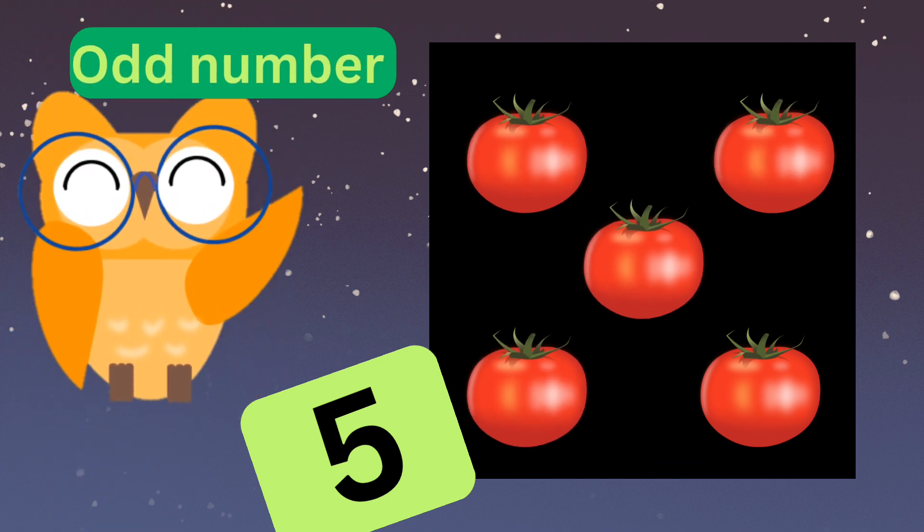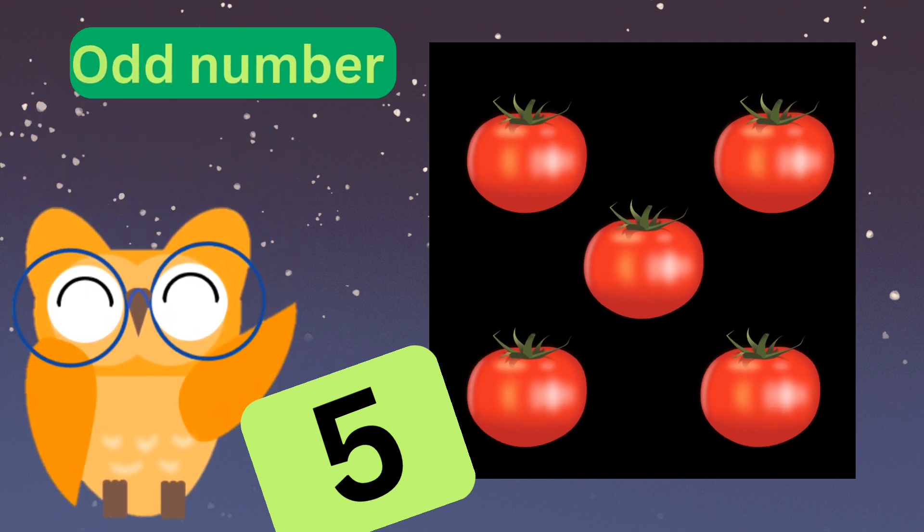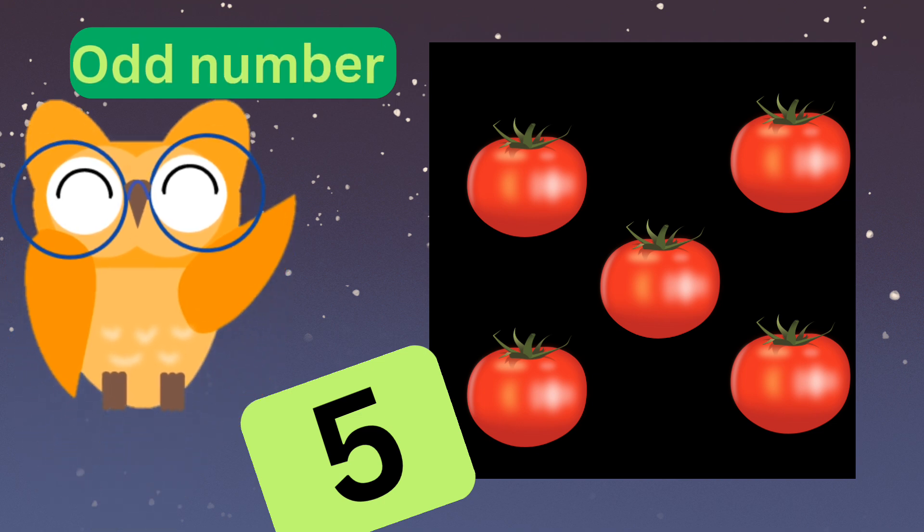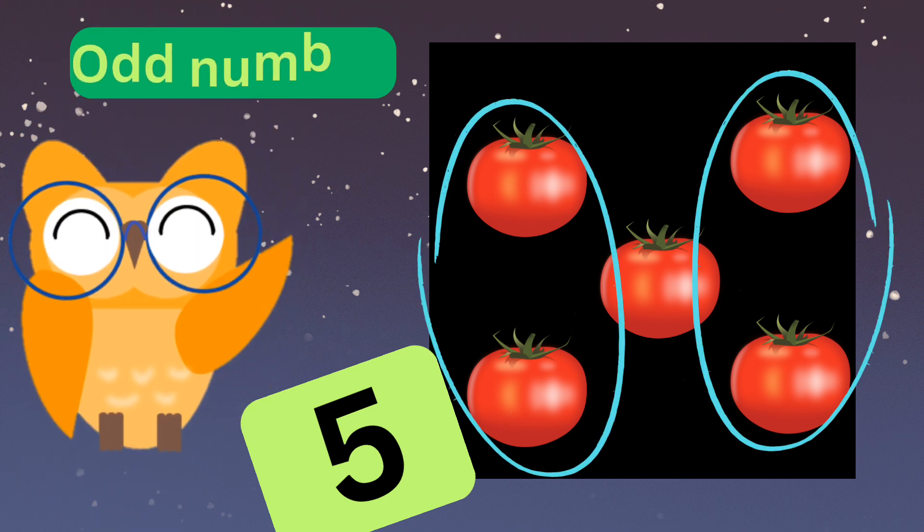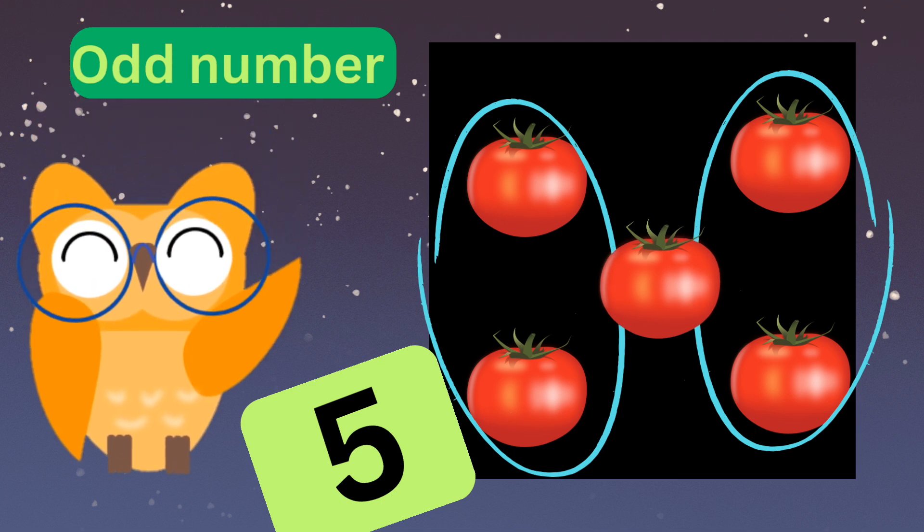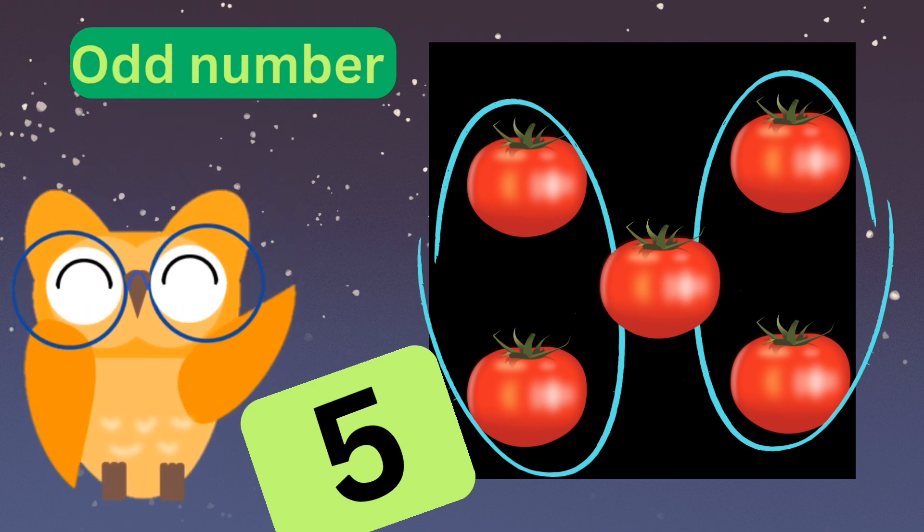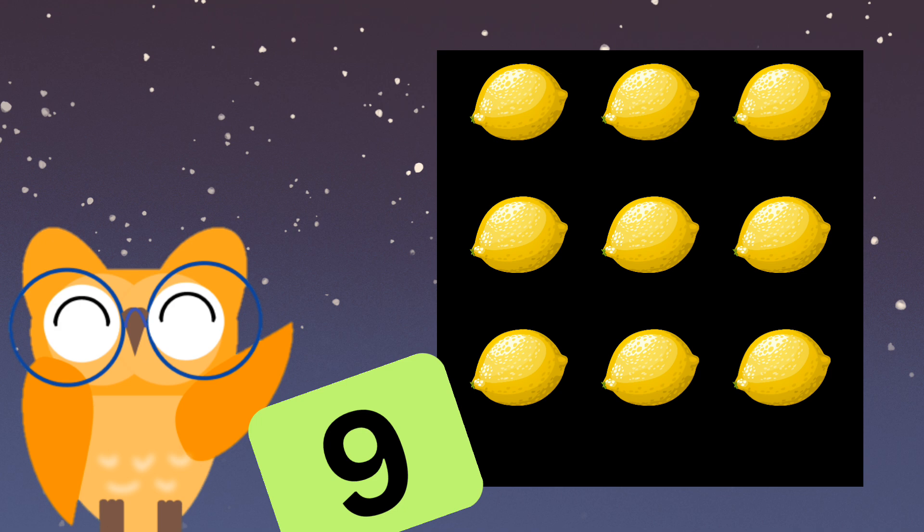Look here, there are five tomatoes. Is five an odd number? Let's make groups of two to see if there are any tomatoes left over. Oops, there's one tomato left out! That's what makes five an odd number.